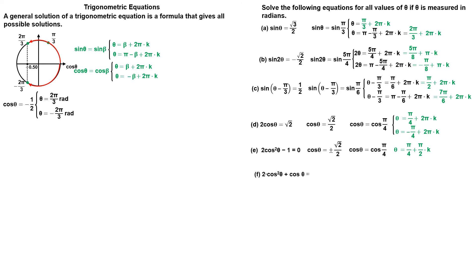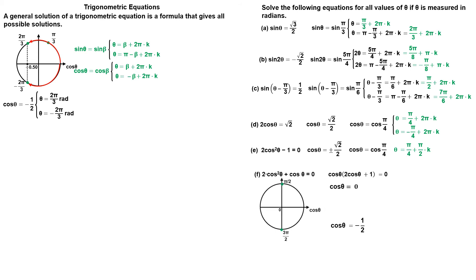The left side of this equation factors, so we will start with factoring. We now solve each of the factors, which creates two trigonometric equations. From the first equation, we get cosine of theta is equal to zero. From the second equation, we get cosine of theta is equal to minus one half. Drawing the unit circle, cosine of theta is zero when theta is pi divided by 2, or theta is 3 pi divided by 2. The angles differ by multiples of pi, so since every multiple of 2 pi is also a multiple of pi, we can combine those two separate answers into one. The second equation has already been solved.